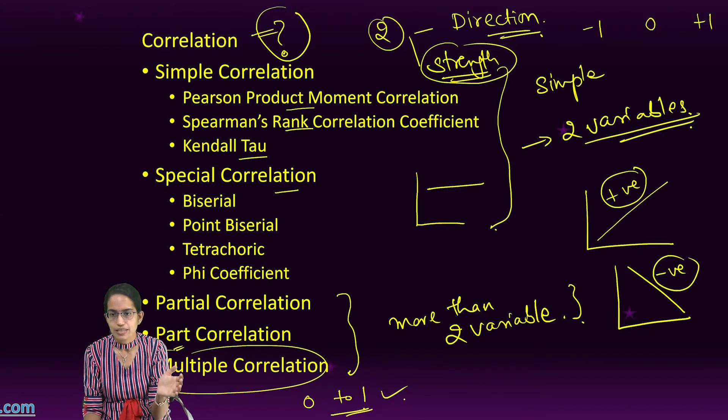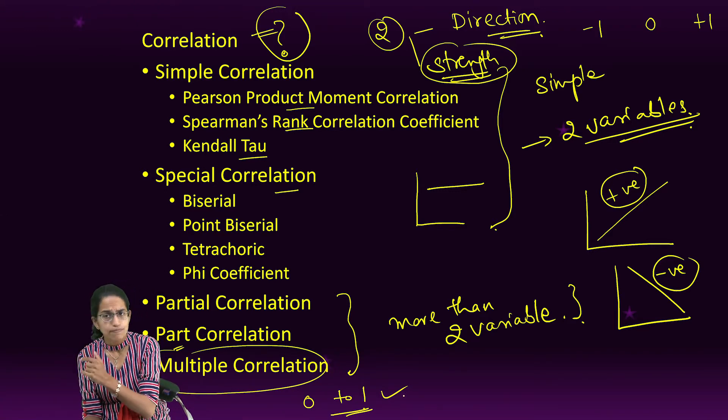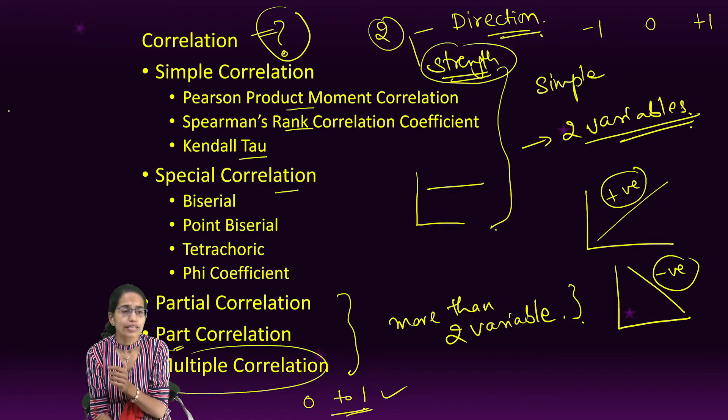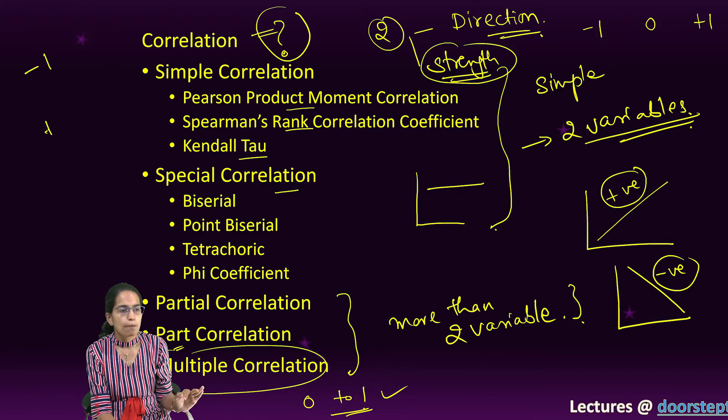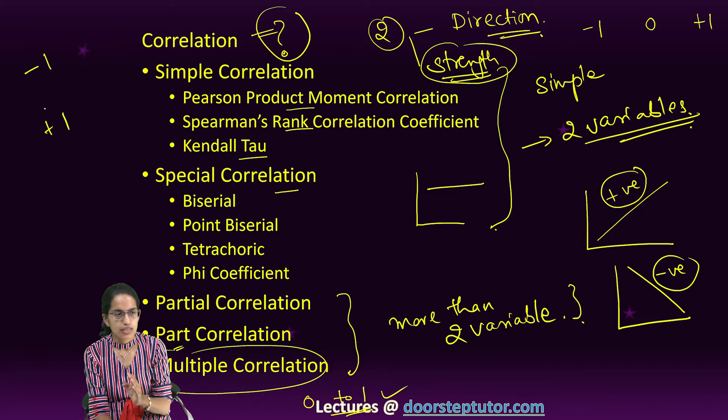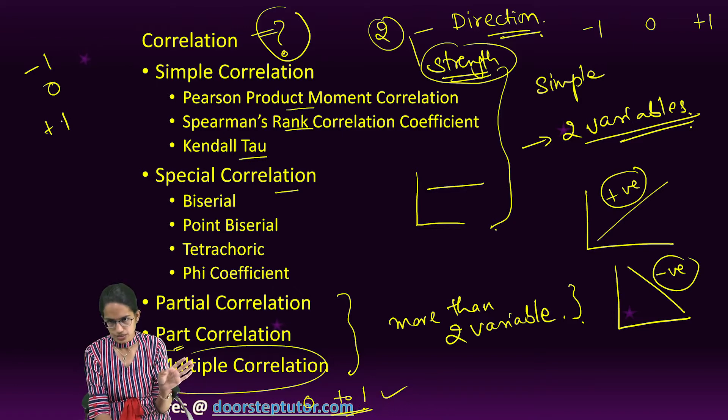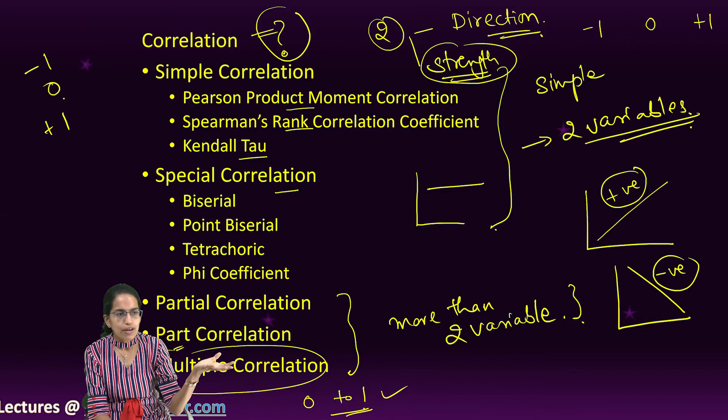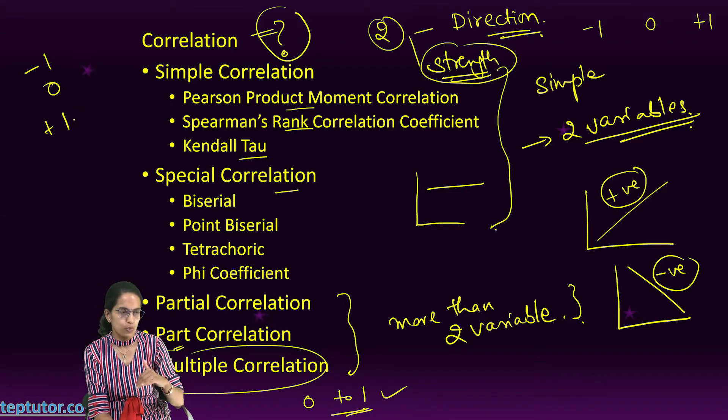So in multiple correlation we would have the range of zero to one, but all other correlations we have minus one, zero, and plus one. So minus one indicates a perfect negative correlation, plus one indicates a perfect positive correlation, and zero indicates no relation.